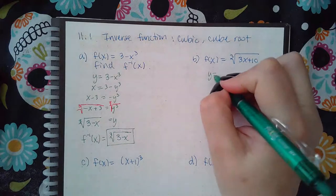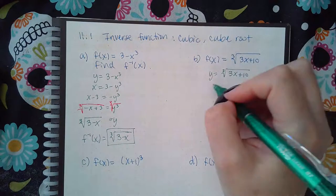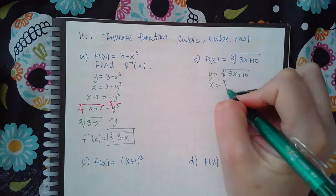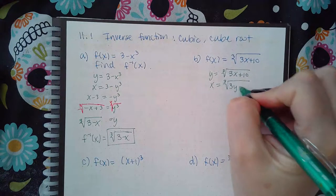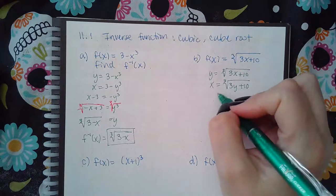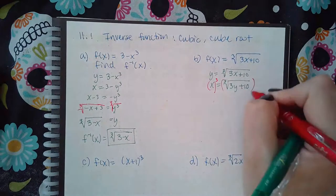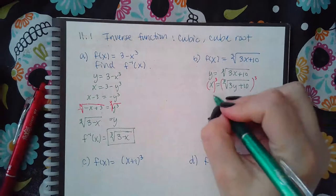Here, change this to y, interchange the x and the y's. That's an important step, that's what now turns this into inverse. And then solve by cubing both sides to get rid of the radical because I'm trying to get y by itself.